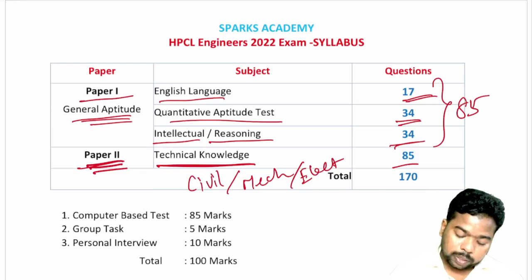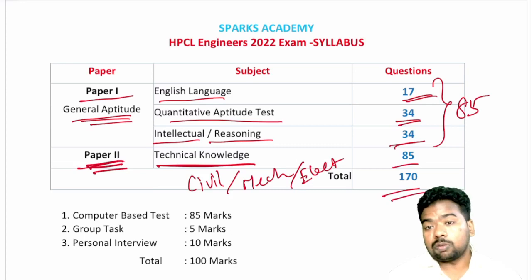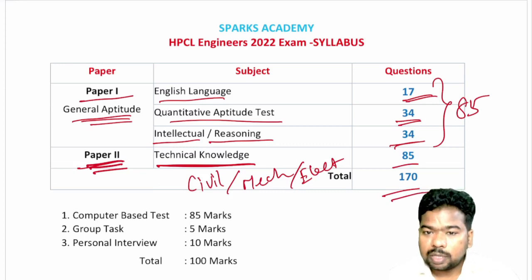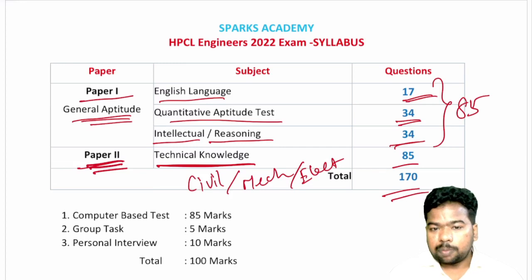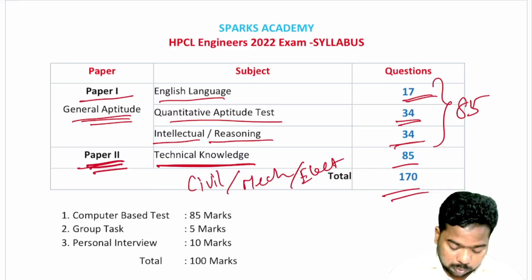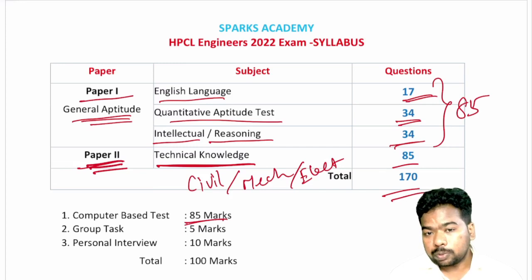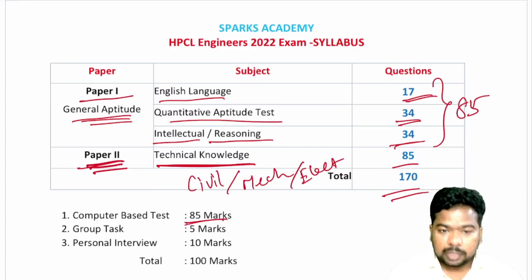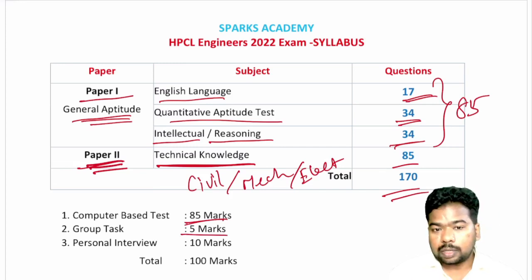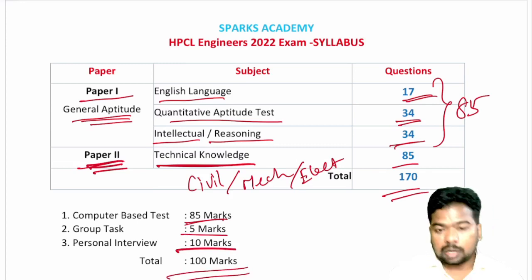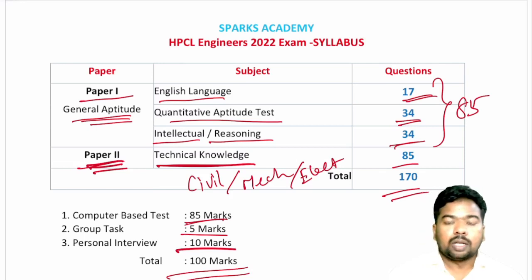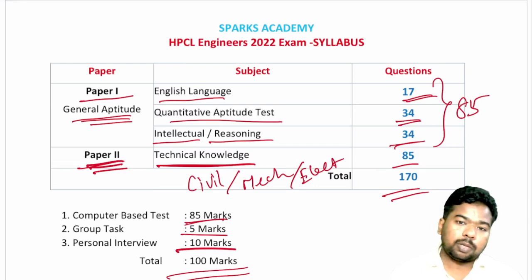Paper 1 has 85 questions and Paper 2 has 85 questions, making a total of 170 questions. This covers the full exam pattern and syllabus that we will now go through in detail.